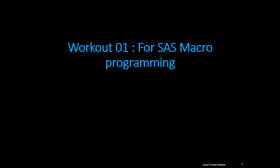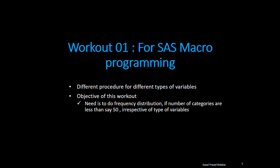During this workout you'll also learn some syntax. The first workout is where we want to run different procedures for different types of variables. If any variable has a number of distinct categories less than a particular threshold, say 50, then one has to run frequency distribution. Otherwise you're not supposed to run it. And that should happen irrespective of type of variable, so whether it's numeric or categorical, if the number of distinct categories is less than 50, then run the frequency distribution.